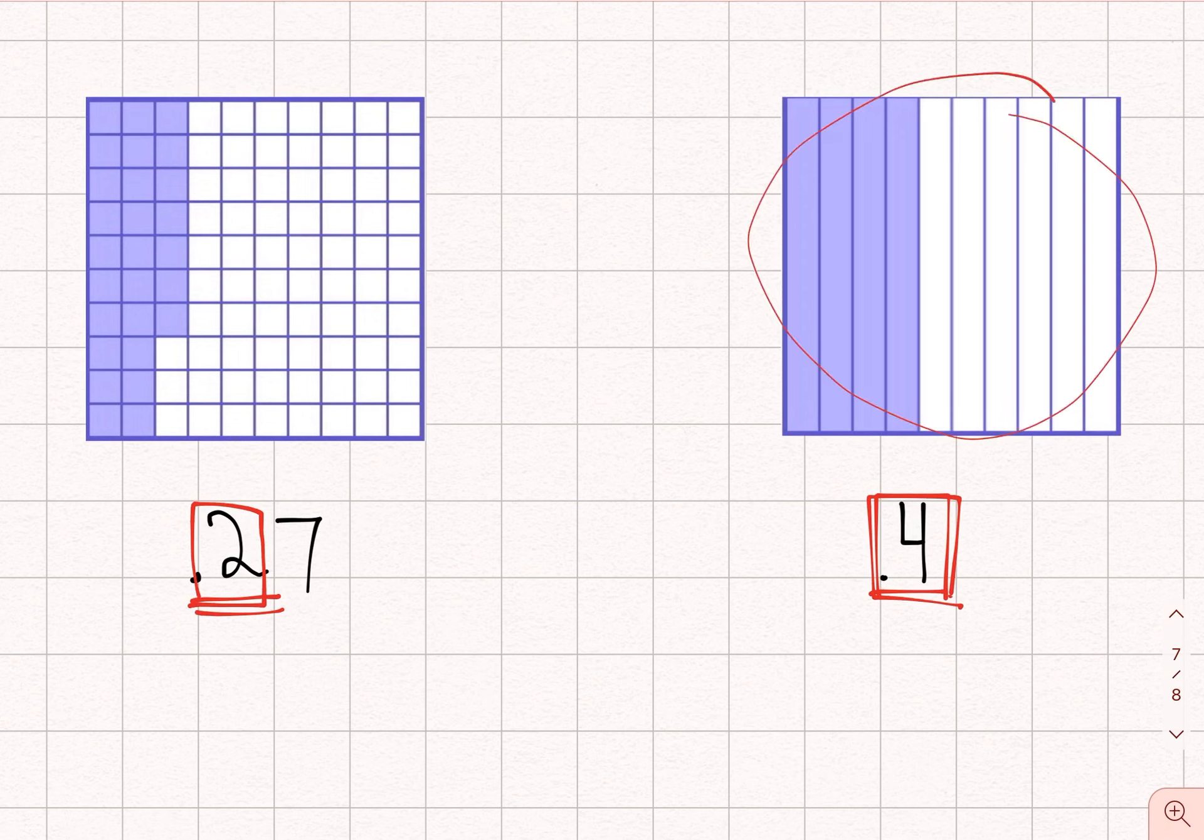So in this case, this one's bigger. So which inequality, which symbol will we use? We'll use this one, which has the larger side here, telling us that this is the larger decimal fraction.